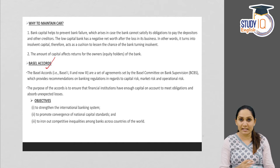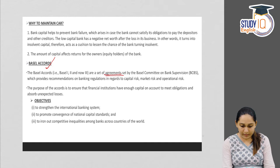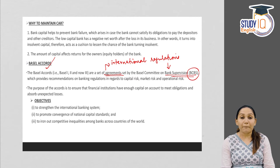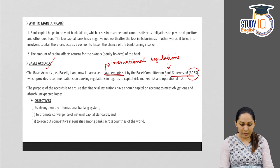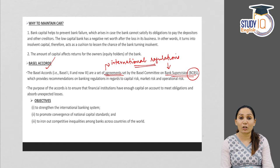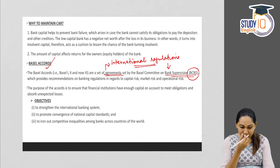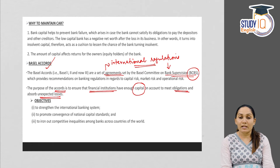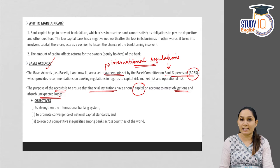Just revising briefly from the last class: Basel norms, also called Basel accords, are international banking regulations. These are issued by the BCBS — the Basel Committee on Banking Supervision. The purpose of these Basel norms is to ensure that financial institutions have enough capital to meet their obligations and to absorb unexpected losses, providing enough cushion to meet uncertainties.